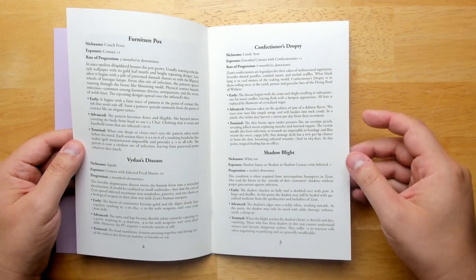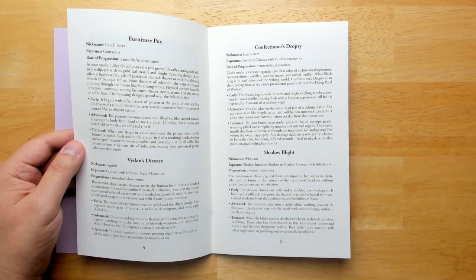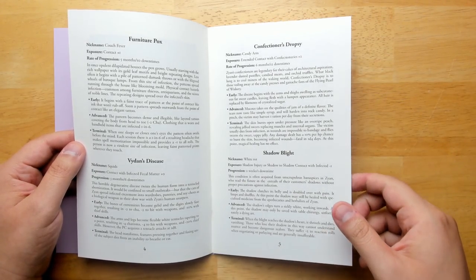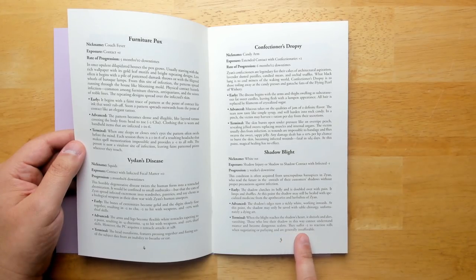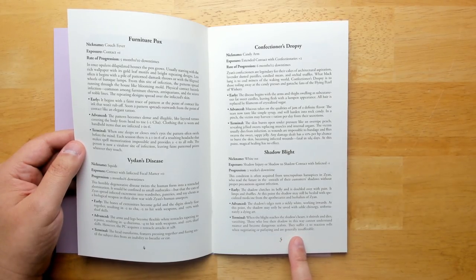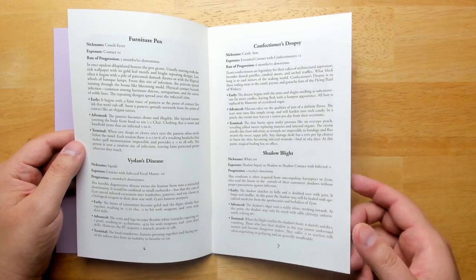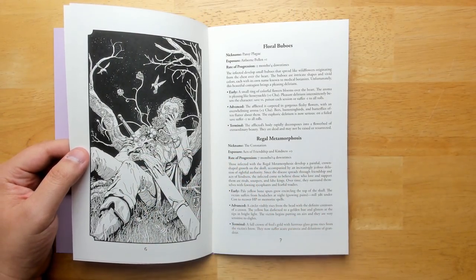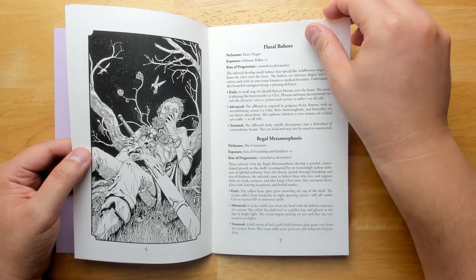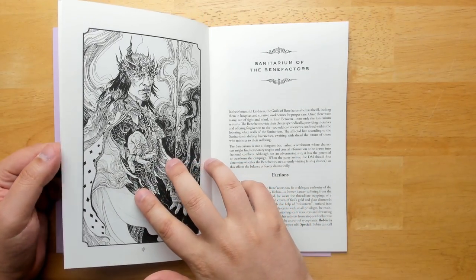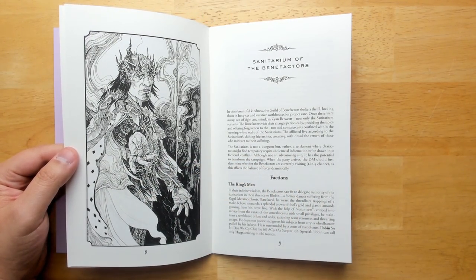The shadow blight. So this is where your actual shadow becomes ill and starts rotting away. And if it becomes terminal and it finally shrivels up your shadow entirely, then you can no longer understand nuance and you become dangerous zealots. You can contract it if your shadow falls across the shadow of someone who's infected. I love the little bits of dream logic here. I'm going to keep saying it.